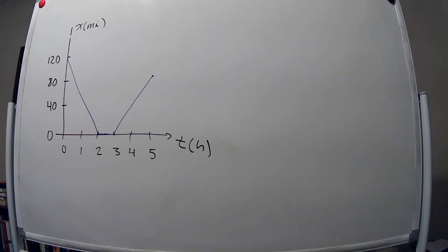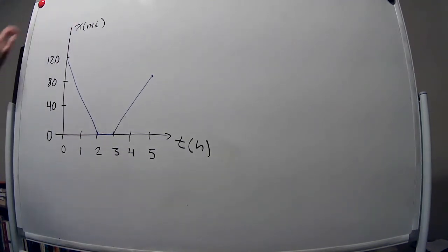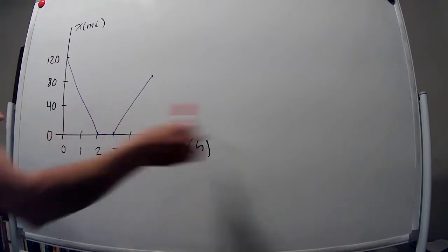So the problem is to consist of writing a short description of the motion of a real object for which the figure on the left will be a realistic position versus time graph. And there are a few things that we can consider. For example, the motion is only in X, so it's one-dimensional.